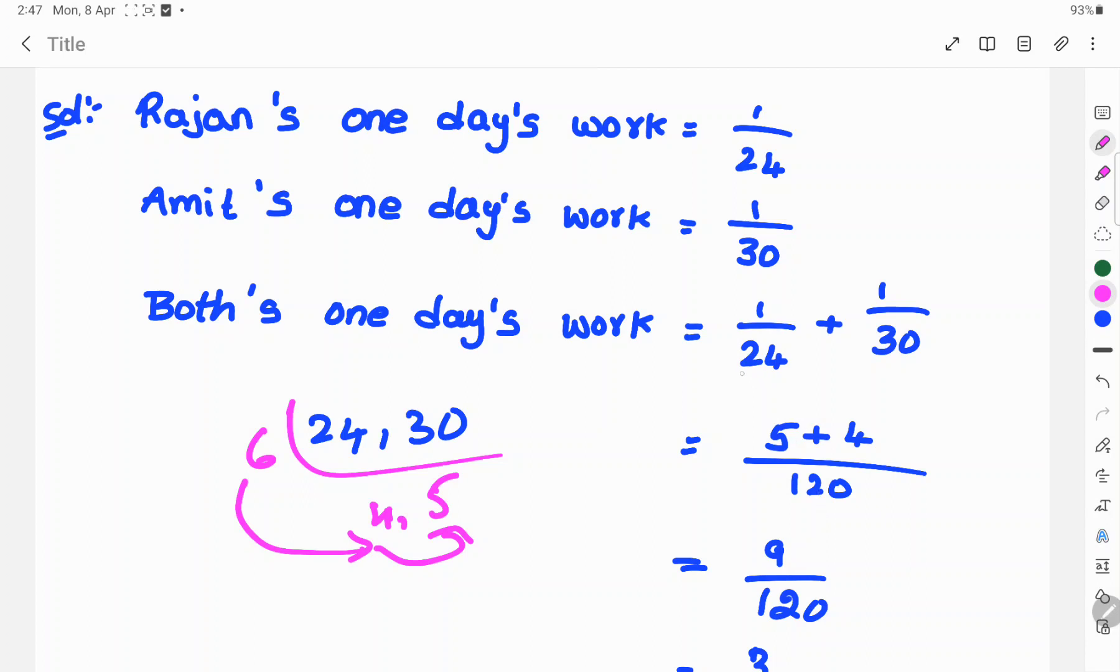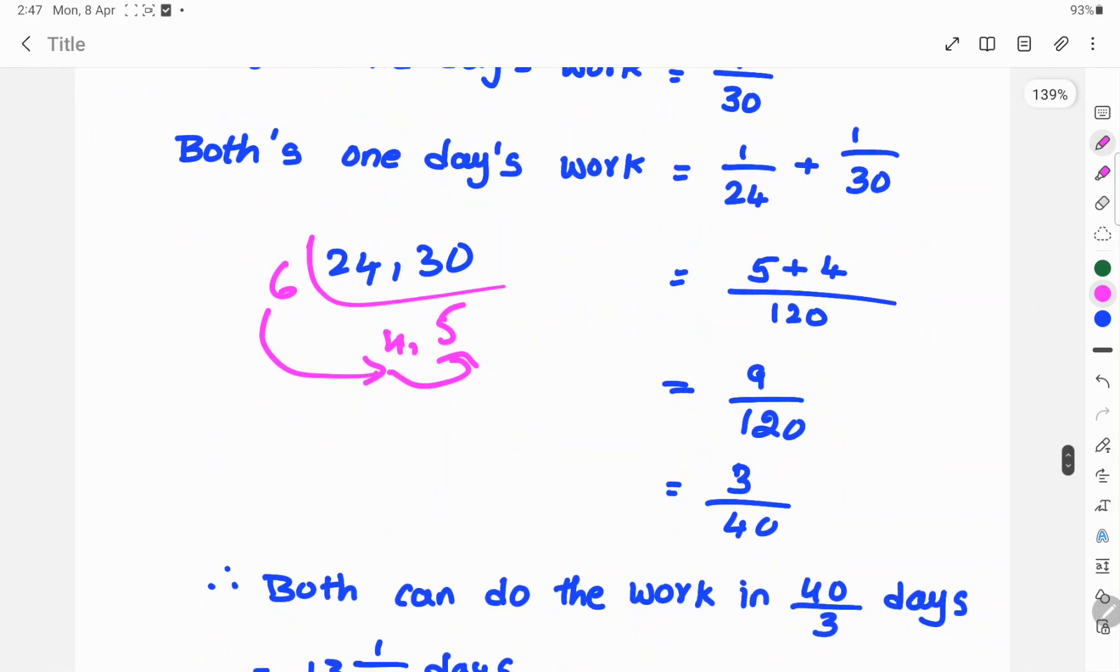120 cancels in 24 in 4 times, 5 times. So 5 into 1 is 5, plus 30 cancels in 120 in 4 times. So 1 into 4 is 4. So 5 plus 4 is 9 by 120. 9 by 120.